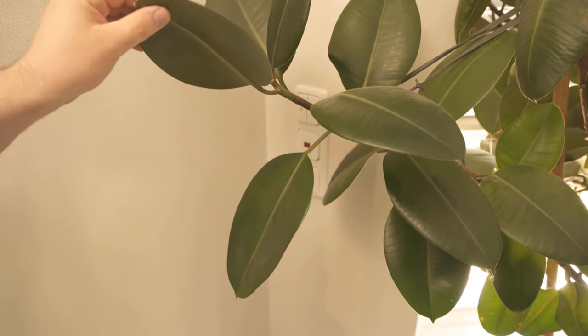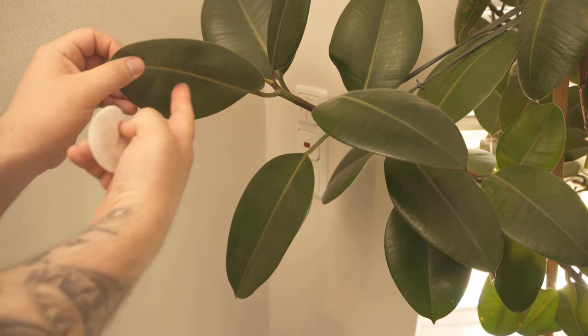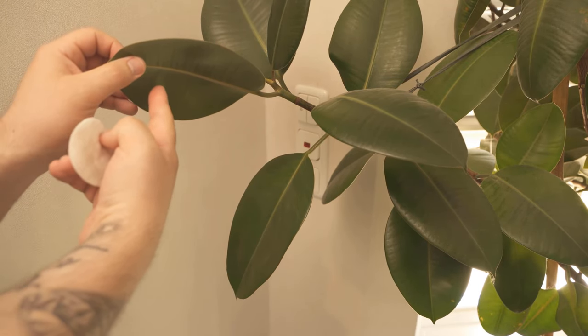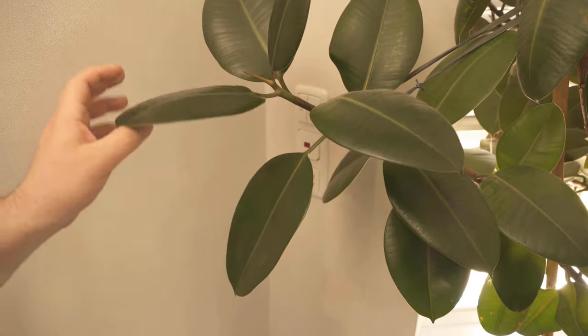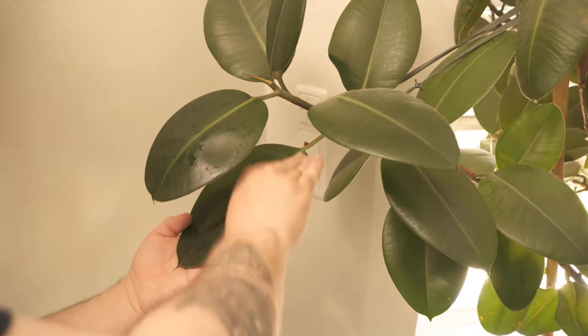What you should not do is rub the leaves from below with it, because there is an exchange happening which you could block. Therefore always rub the leaves only from above with our beer water mixture.